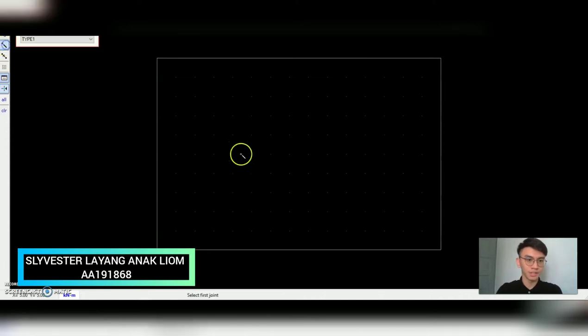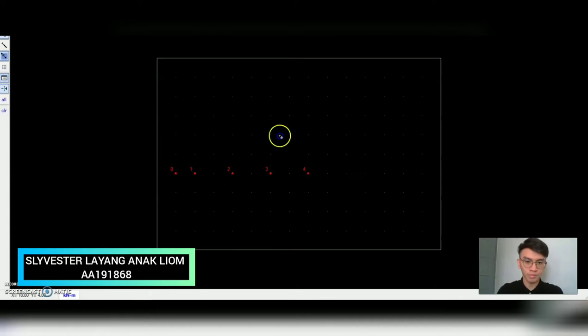Let's see. For each member, the length is 2m and the modulus of elasticity for our bridge is 25 GPa, which is steel.